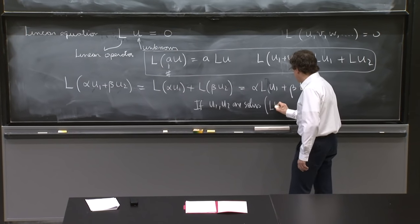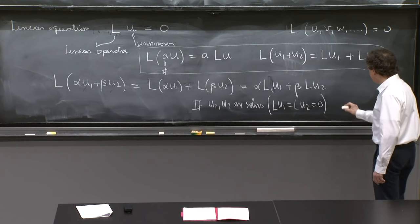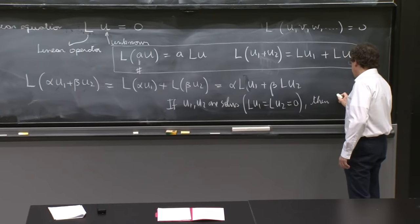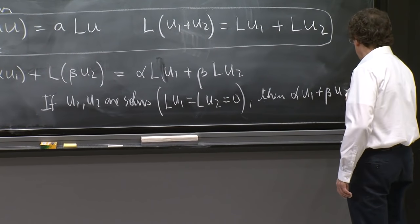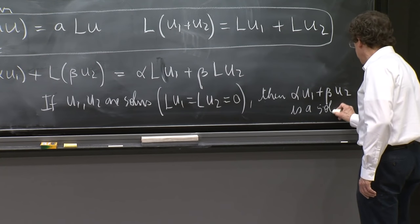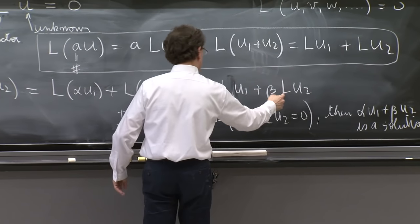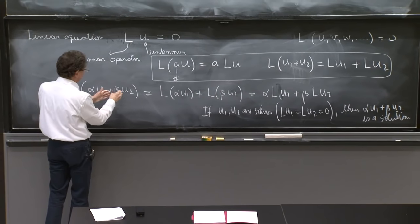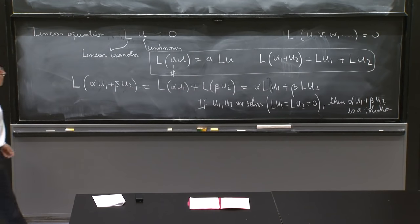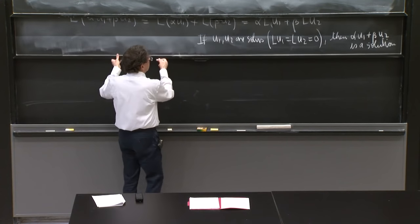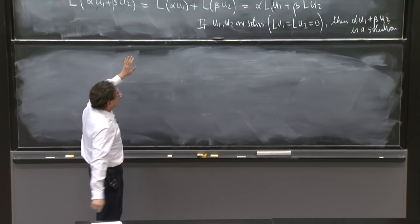Then you realize that if u1 and u2 are solutions, which means Lu1 = Lu2 = 0, if they solve the equation, then alpha u1 plus beta u2 is a solution. Because if Lu1 is 0 and Lu2 is 0, L of alpha u1 plus beta u2 is 0 and it is a solution.